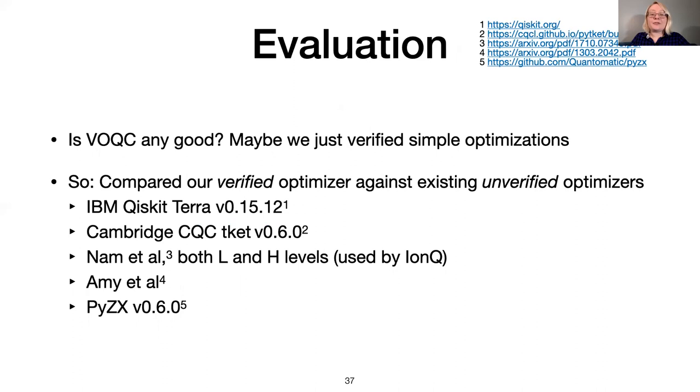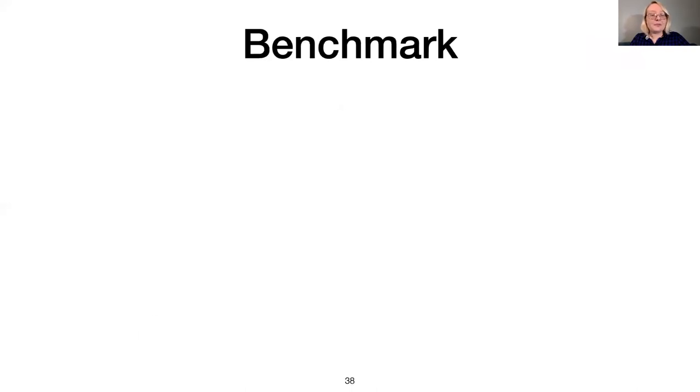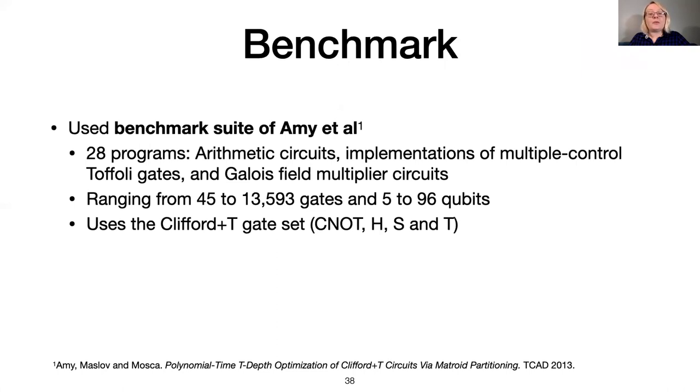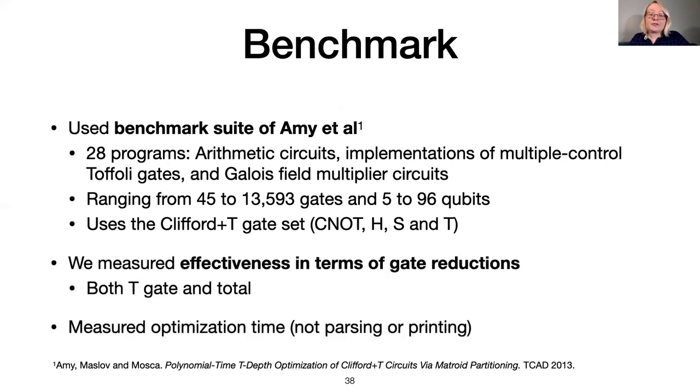To evaluate VOQC, we compared it against industrial compilers Qiskit and tket, research compiler PyZX, and the compilers presented in Nam et al. and Amy et al., none of which are verified. As we are evaluating a subset of the optimizations available in Nam et al., our goal was not to beat these tools, but to demonstrate that the optimizations we have implemented and verified are on par with unverified tools, showing that we need not sacrifice performance for correctness. We evaluated VOQC on a set of 28 programs, with 45 to several thousand gates and 5 to 96 qubits. The programs all use the universal gate set CNOT HST, where S and T are phase shift RZ gates, with arguments π over 2 and π over 4. This is a standard benchmark set that has been used to evaluate several quantum optimizers. We measured effectiveness in terms of total gate reduction and T gate reduction, both of which are common metrics in the literature.